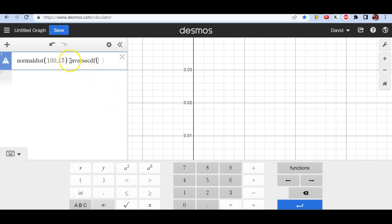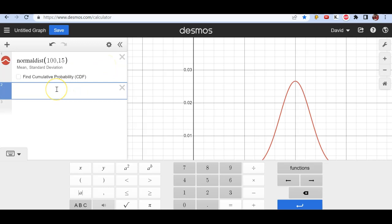You could also just type inverse CDF. When you're typing it out, it will not know what you're meaning until you've got it all typed out. So you have to type out the word inverse CDF, and as soon as you hit the F, it understands, and all the letters come together.